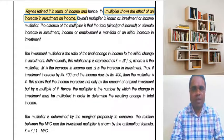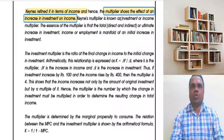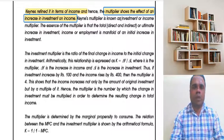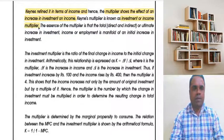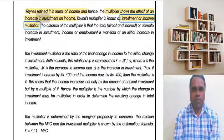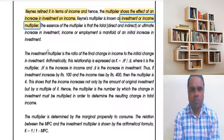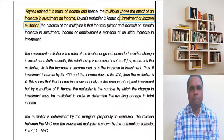So while R.F. Khan's version was called the Employment Multiplier, Keynes's version is known as the Investment Multiplier or Income Multiplier.